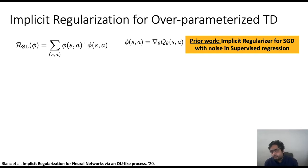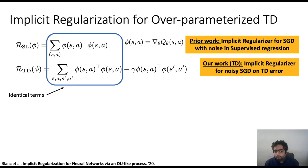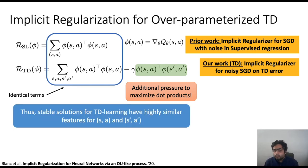Extending this analysis to TD learning is complicated because TD learning does not always converge, and its dynamics are hard to analyze due to intractable terms. We make simplifying assumptions about positive definiteness of certain matrices in TD learning's dynamics, which lets us handle both issues. Under these conditions, we derive the implicit regularizer for running noisy SGD on TD error, finding it has two terms: the first is identical to supervised learning, and the second is an additional term that pressures the network to maximize dot products at (s,a) and (s',a') — exactly the quantity we observed increasing in our experiments.